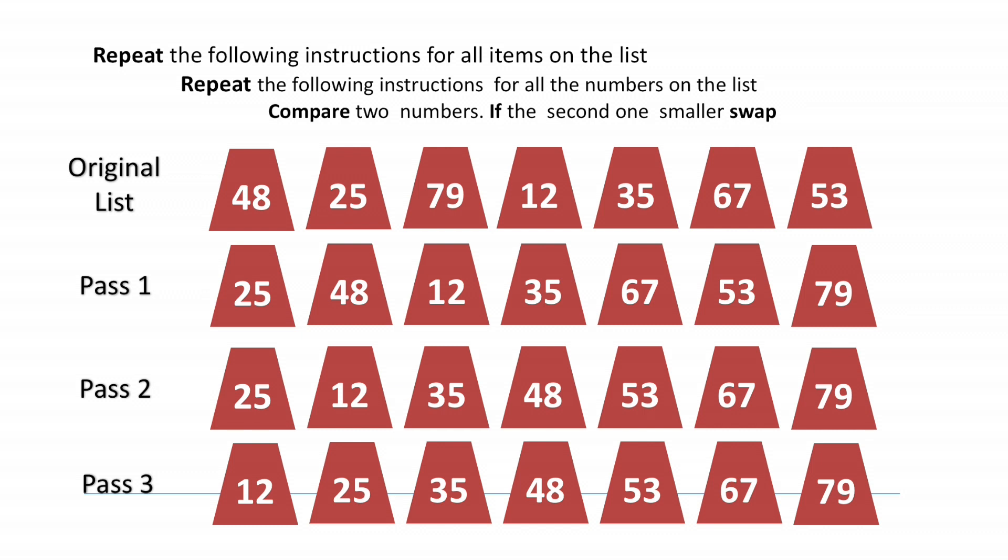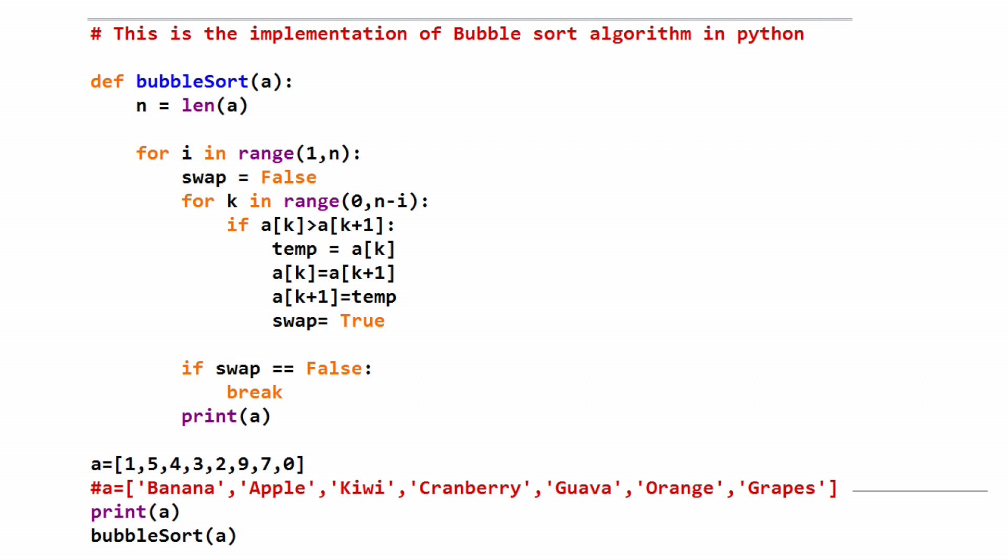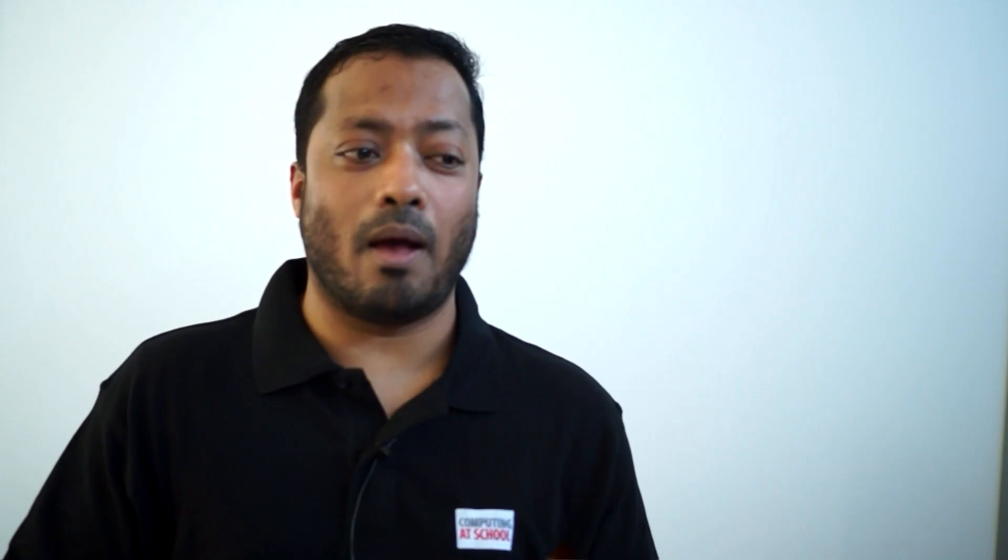We can also optimize this to make it a little bit more efficient. I'm going to show you the optimized code for bubble sort using the swap flag. The idea is, if you don't swap any item when you're comparing, that means your list is sorted. We can use this to increase the efficiency of the bubble sort.